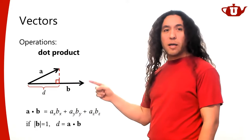We'll use cross products often just to get a perpendicular vector, but sometimes we use it to measure the area between two vectors. If vectors a and b are in the same direction, the parallelogram area is zero, so the cross product gives a zero vector regardless of their lengths.